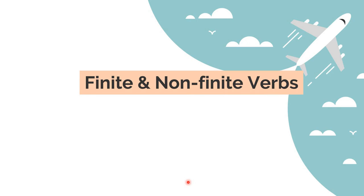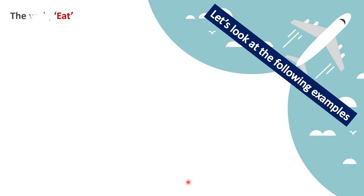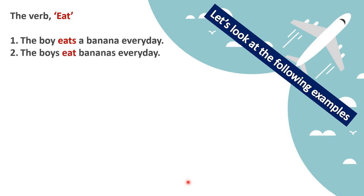Now moving to finite and non-finite verbs - pay very careful attention to the verb itself. We are working on the verb 'eat.' 'The boy eats a banana every day' - the subject 'boy' is singular, so it is 'eats.' 'The boys eat bananas every day' - since 'boys' is plural, the verb becomes 'eat.' The verb is changing its form because of the number of the subject.